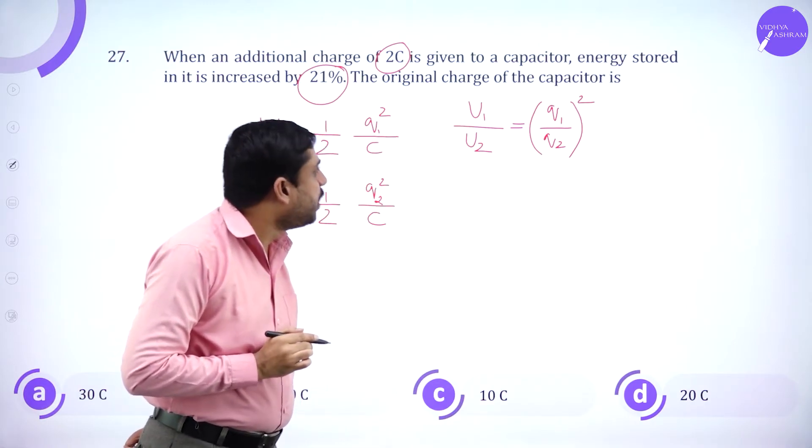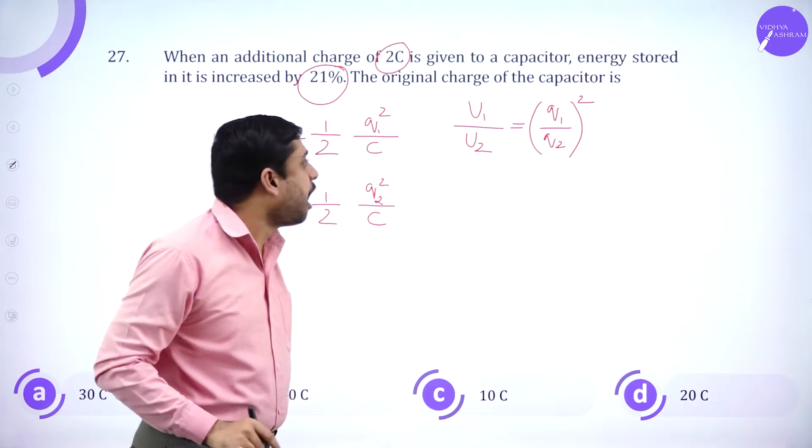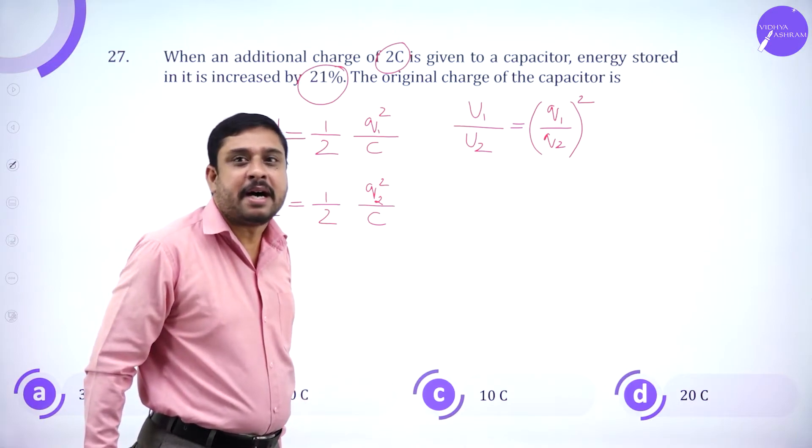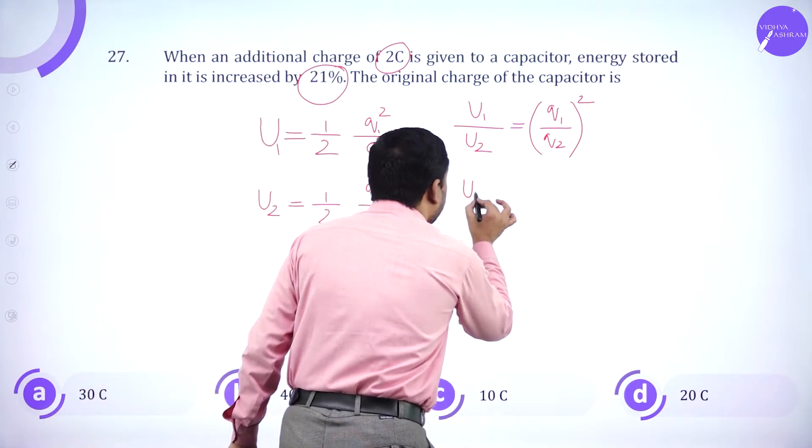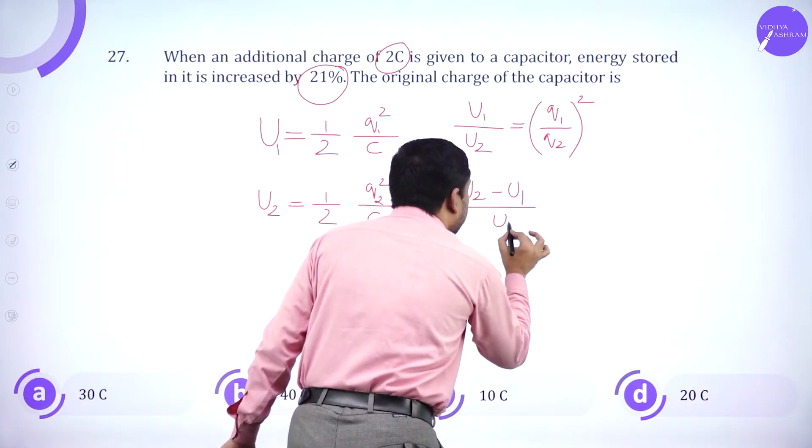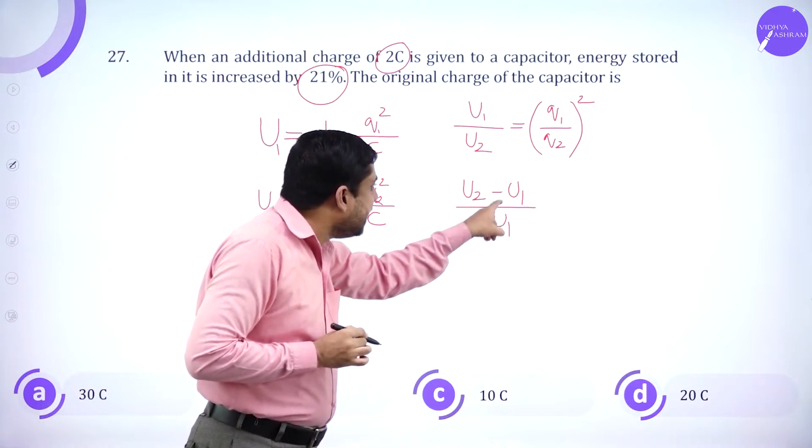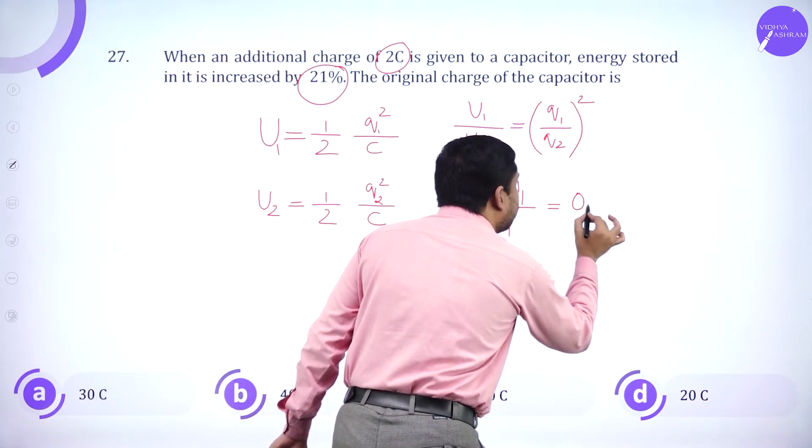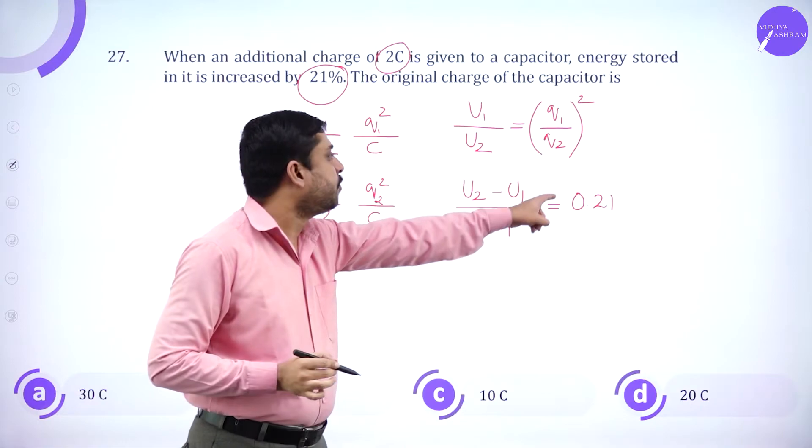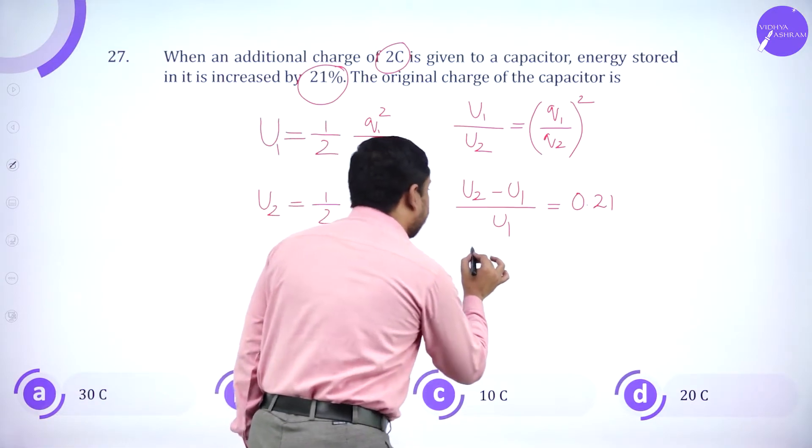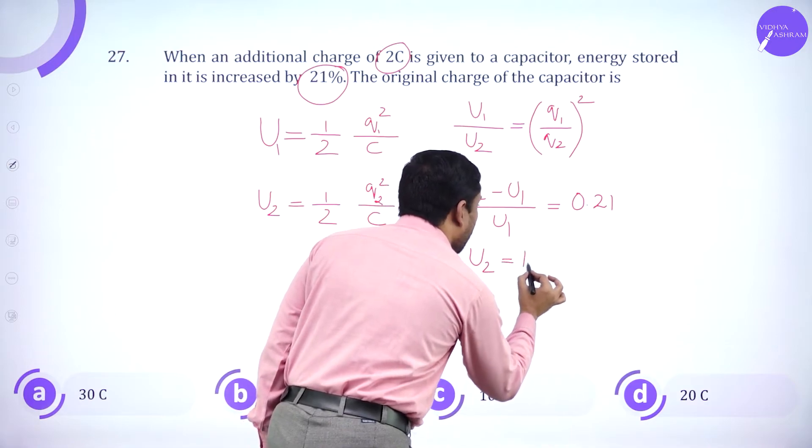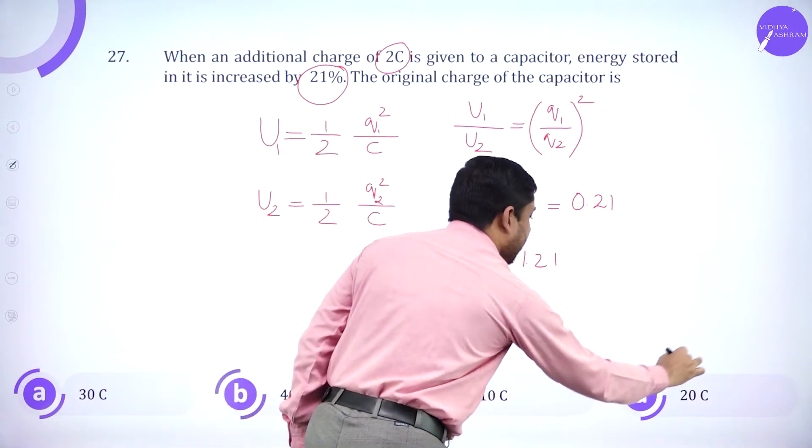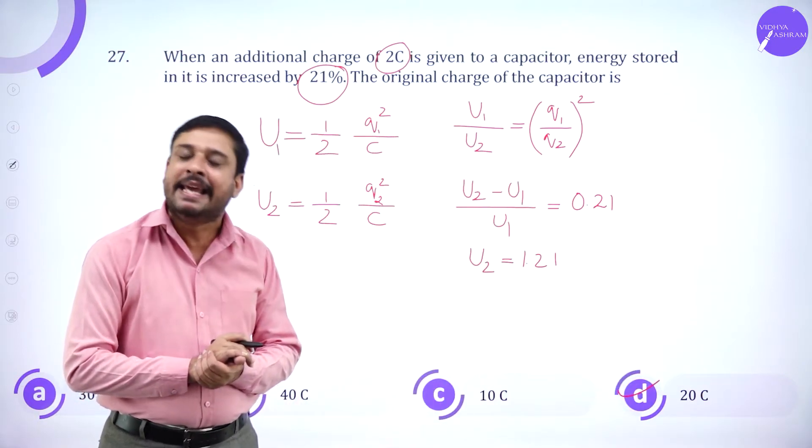If I take the ratio U1 by U2, it is Q1 by Q2, the whole square. Now, additional charge is increasing the energy by 21%. U2 minus U1 by U1 equals 0.21, which means U2 is 1.21. Substituting back here, if you simplify, the fourth option will be the answer.